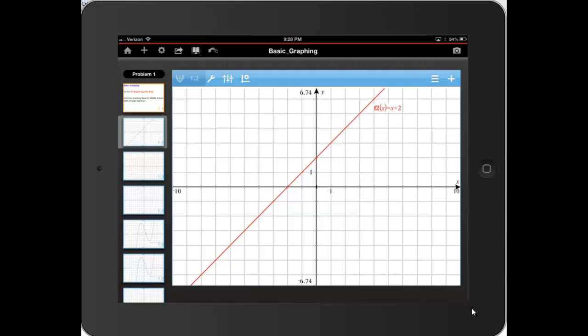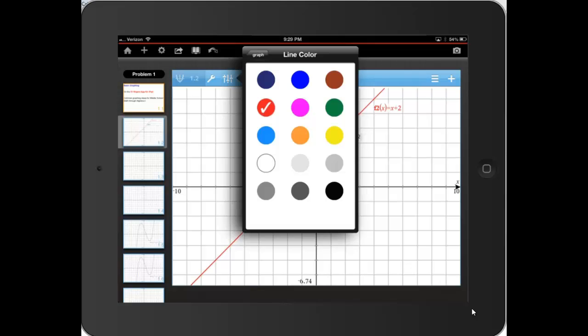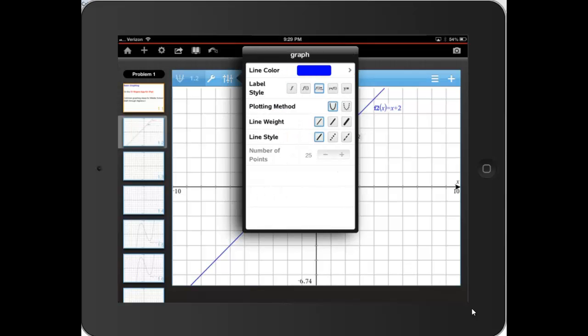I can tap the curve to select it and then go to the three rods here that allow me to change the attributes. I can change the color to let's say blue. I can change the line weight to be a little bit more medium and the line style to be dashed.